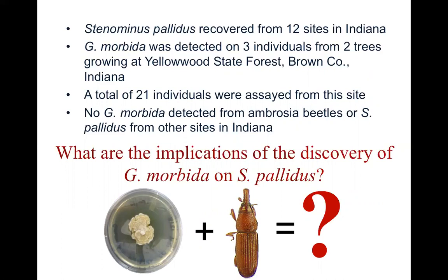After the detection of Geosmithia morbida on those individuals, we went back and looked at the other 21 individuals collected from that site. No Geosmithia morbida was detected from the other 21 individuals — only those three individuals from two trees — and we found no Geosmithia morbida from any of the ambrosia beetles or from Stenomimus pallidus from other sites in Indiana. This was the first time that Geosmithia morbida had been found on an insect other than the walnut twig beetle.